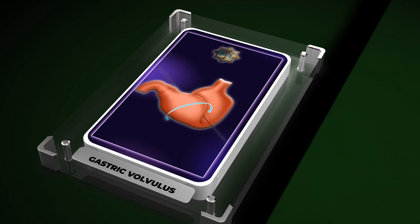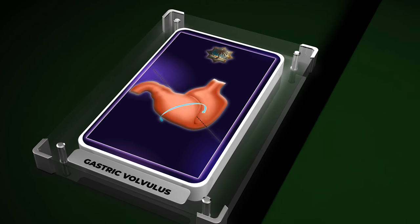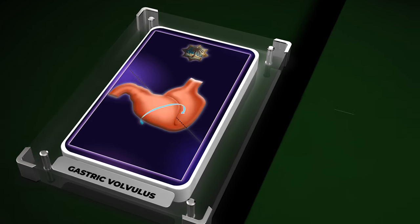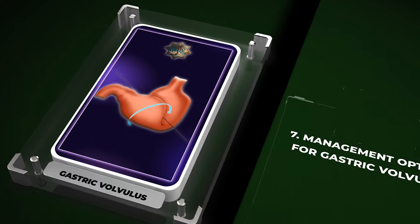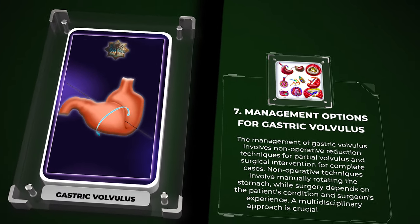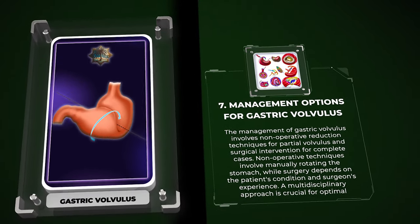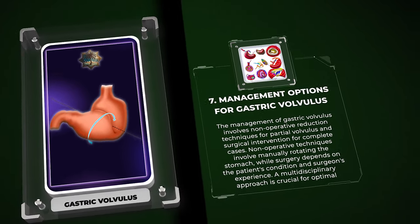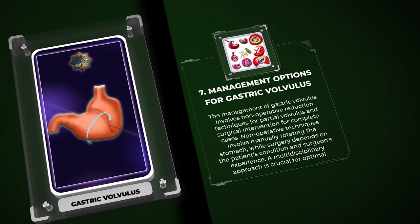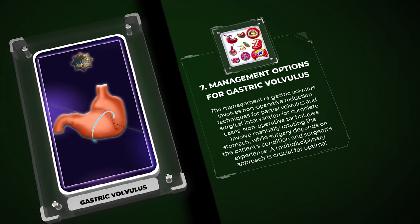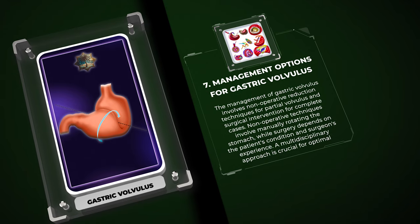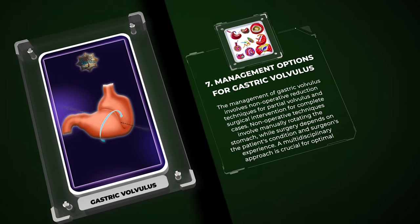The management of gastric volvulus involves nonoperative reduction techniques for partial volvulus and surgical intervention for complete cases. Nonoperative techniques involve manually rotating the stomach, while surgery depends on the patient's condition and surgeon's experience. A multidisciplinary approach is crucial for optimal outcomes.